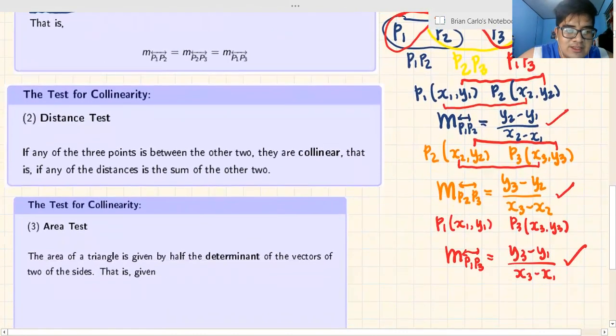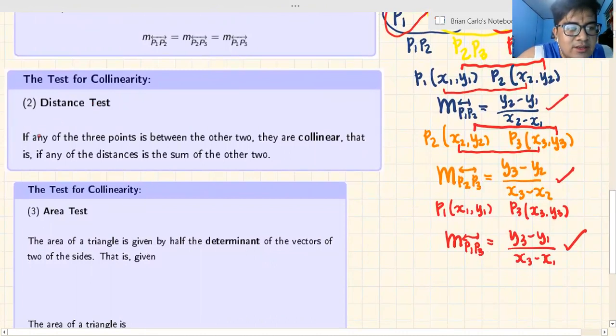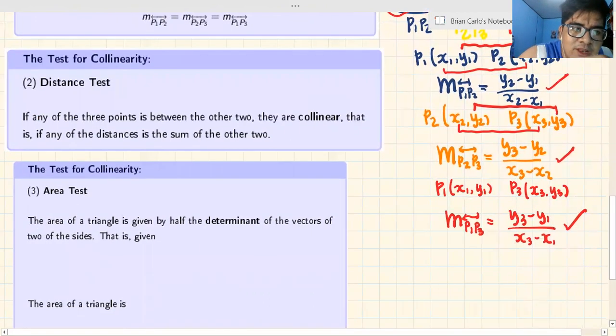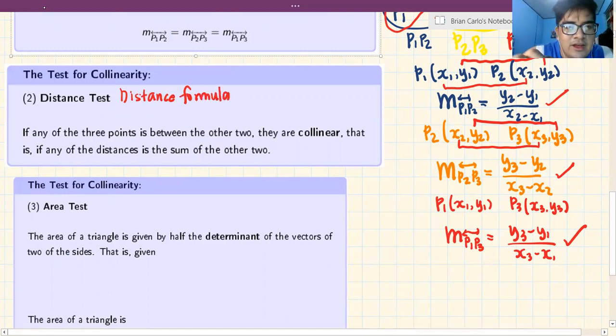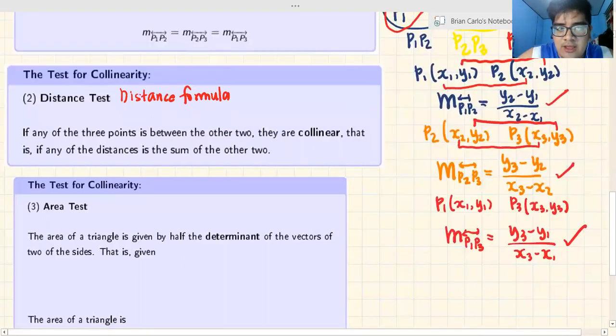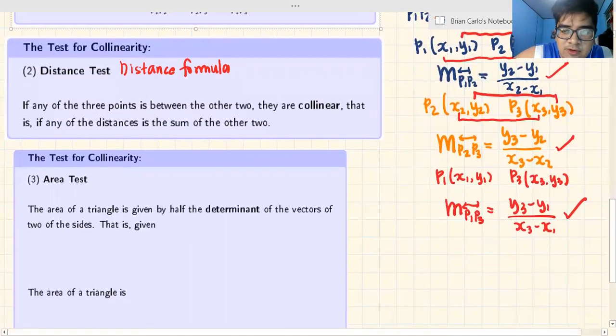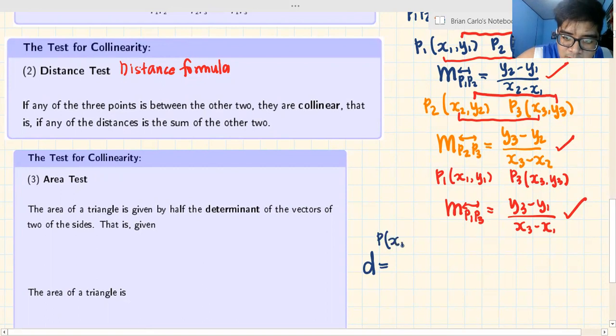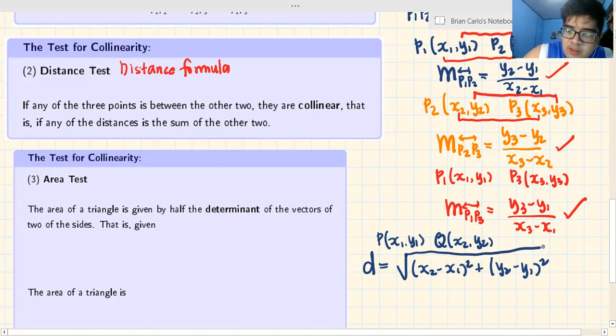Now let's move to the distance test. If the slope test uses slope, the distance test uses what? Distance formula. Do you remember the distance formula? If not, go to the previous videos. The distance formula is: given two points P(x1,y1) and Q(x2,y2), the distance between them equals the square root of (x2-x1)² plus (y2-y1)².